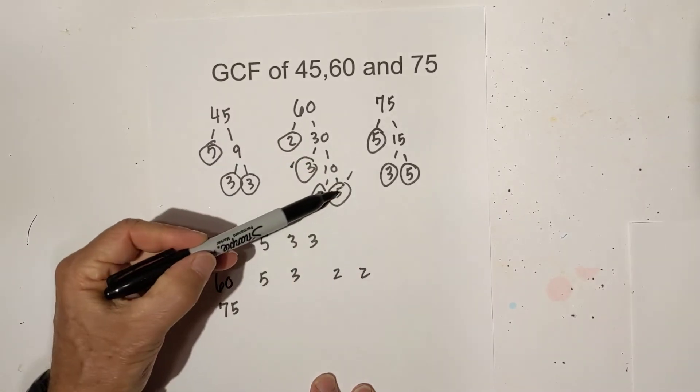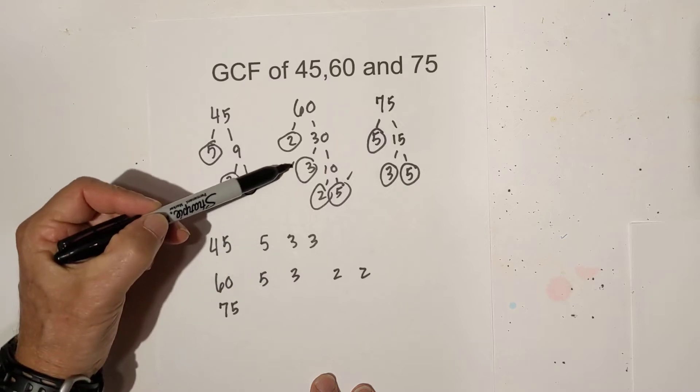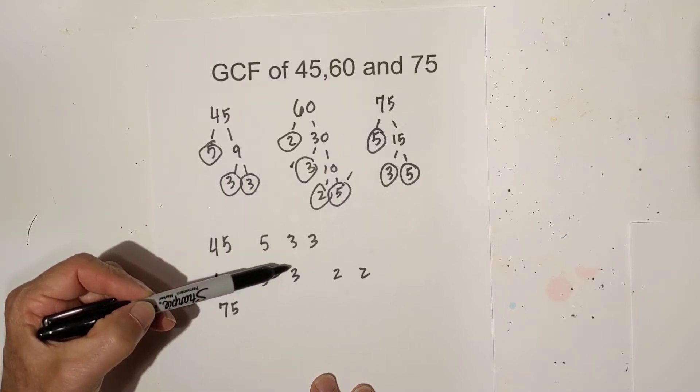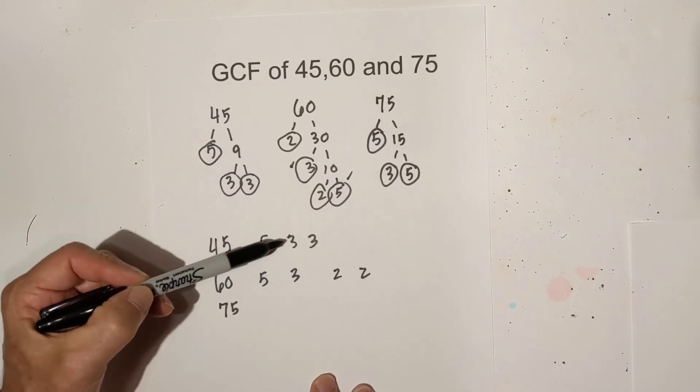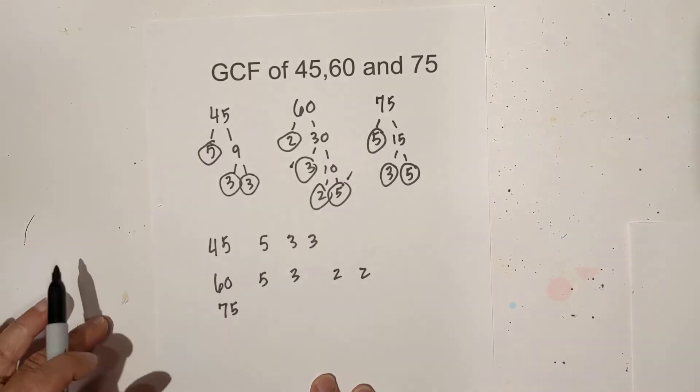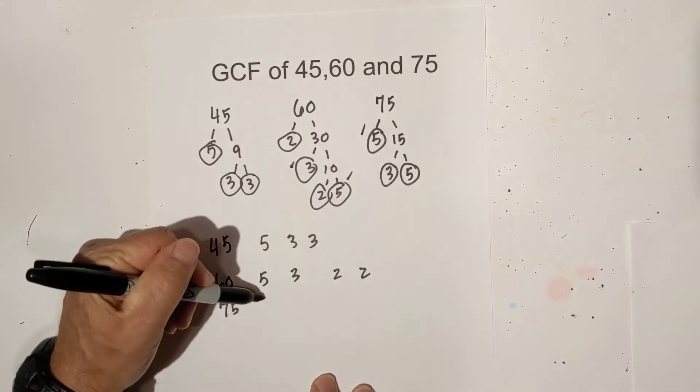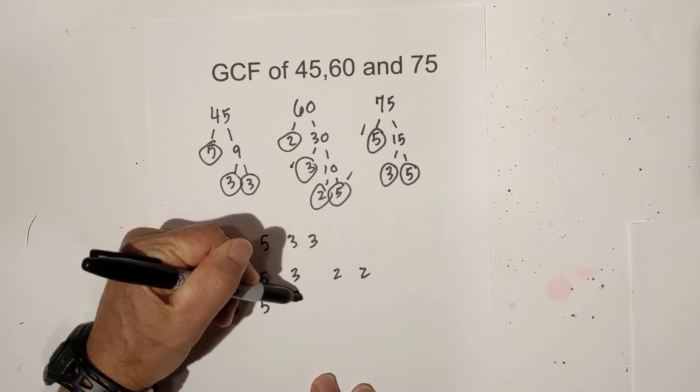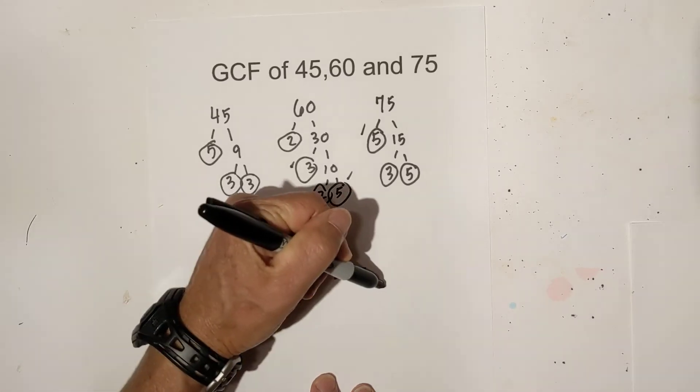So what I did here since I had a 5 I wrote it under the 5, since I had a 3 wrote it under the 3. I didn't have any 2s so I wrote them off to the side. I'll do the same thing here. I've got a 5, a 3, and then another 5.